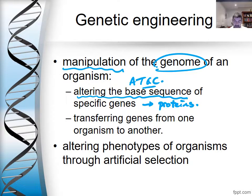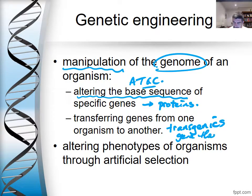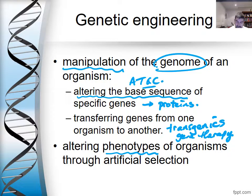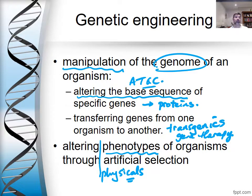Genetic engineering can also include the transferring of genes from one organism to another — that's the area of transgenics we've talked about in previous videos — and also things like gene therapy. This can also apply to alterations in the phenotype or physical characteristics of organisms through things such as artificial selection. So there is more than one way of changing organisms and populations through breeding techniques and manipulation at the gene level.